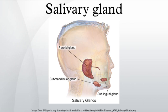These nerves release acetylcholine and substance P, which activate the IP3 and DAG pathways respectively.